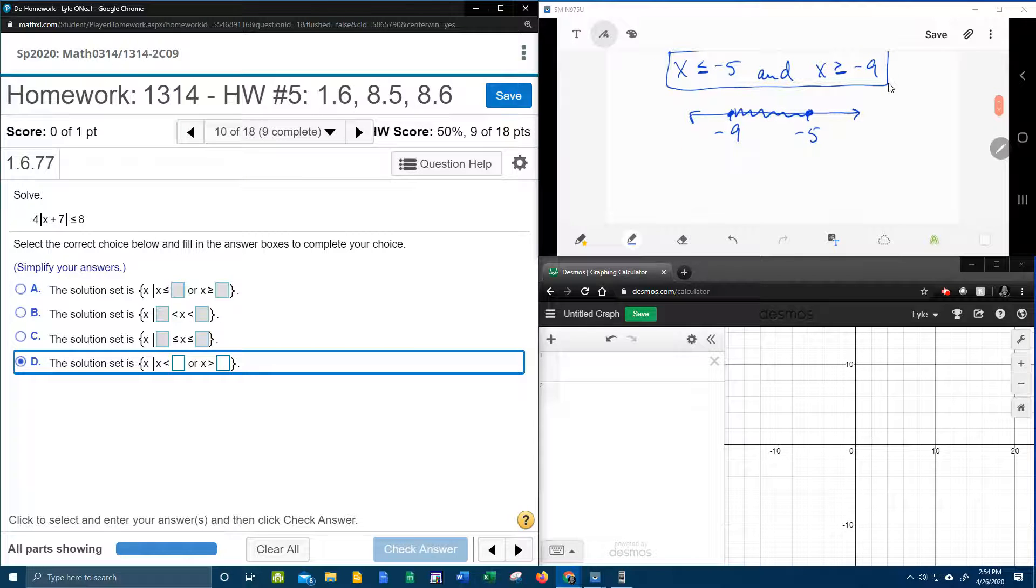So in interval notation, this would be everything from negative 9 to negative 5. Whoops, not a parenthesis, that's a bracket. Because solid dots say that those values are included. And that's what brackets say. It says the negative 9 and the negative 5 are included.